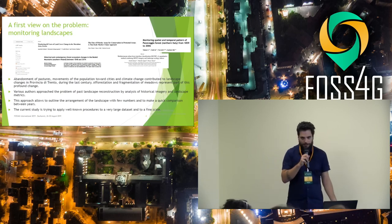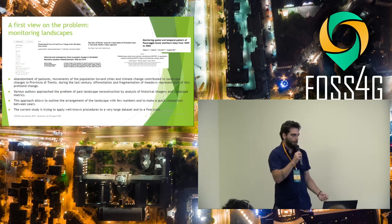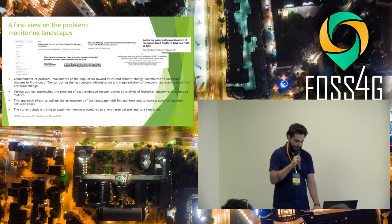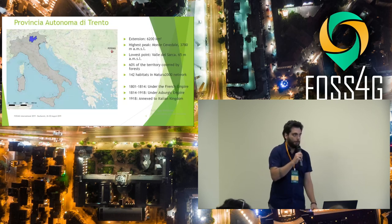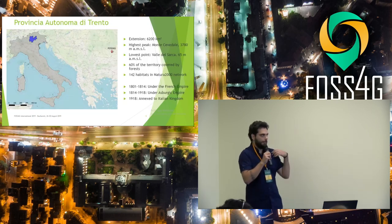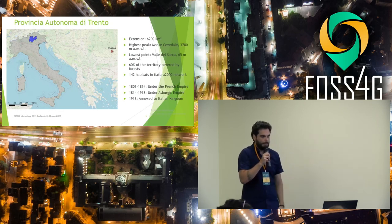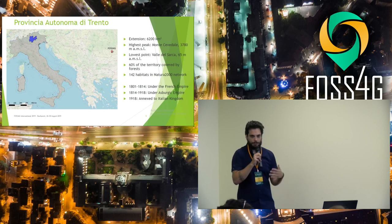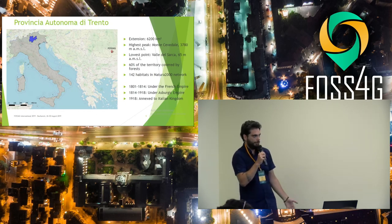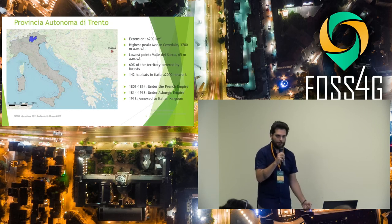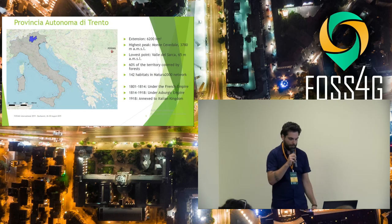Forests are now taking over the open areas, with a little help from climate change which allows them to move higher on the mountains. The current study is trying to apply a well-known procedure from the literature to a very fine scale over a very large area. Here we have a quick overview of the study area, which is Trentino, a region in the north part of Italy, mostly covered by mountains, with over 60% covered by forest, and we also have a lot of habitat in the Natura 2000 network.